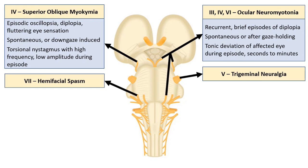Similar but different, and can affect any ocular motor nerve, is ocular neuromyotonia — when you get a sustained tonic contraction of one of the muscles, usually after gaze in that direction. It lasts for a few seconds and spontaneously resolves. The patient will have double vision, and if you examine them during a spell, they'll essentially have a fixed tonic deviation of one eye which will slowly resolve.